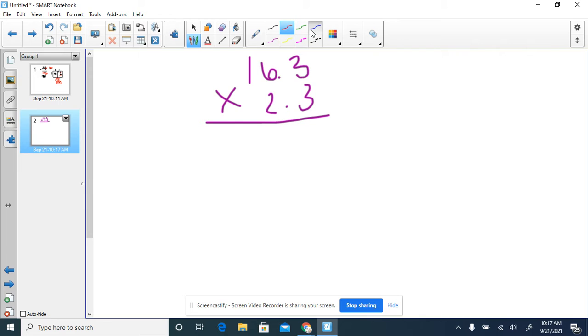The first thing you're going to do is start in our tenth spot, so 0.3. We're going to multiply 3 times 3 gives us 9. 3 times 6, which is 18, so we'll put down our 8. We're going to carry that 1. 3 times 1 is 3, plus 1 is 4.